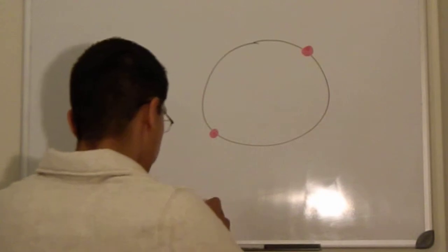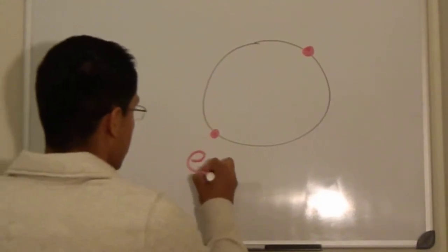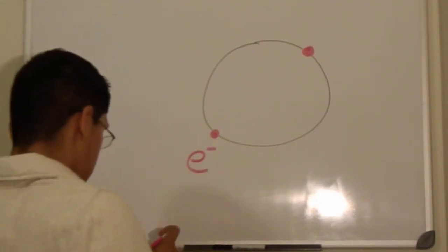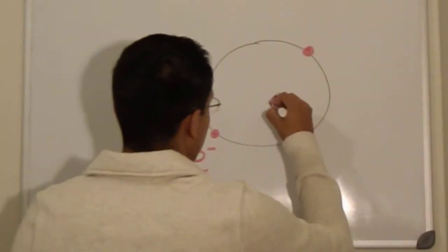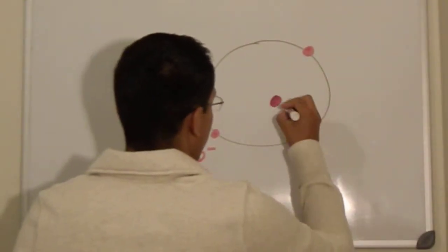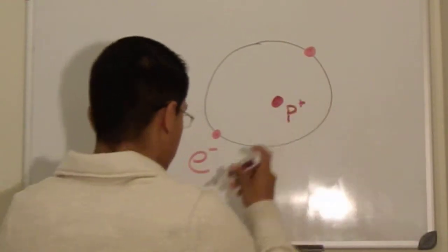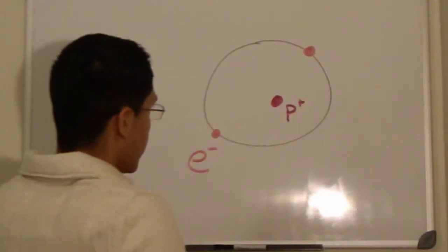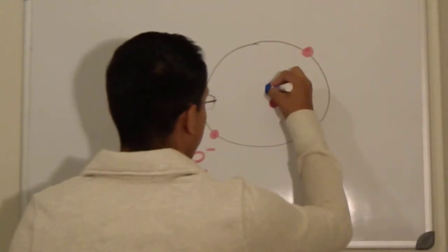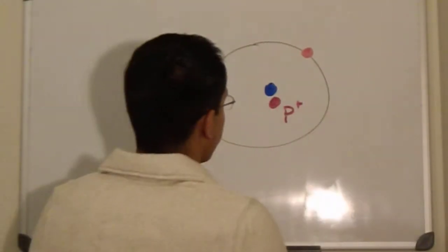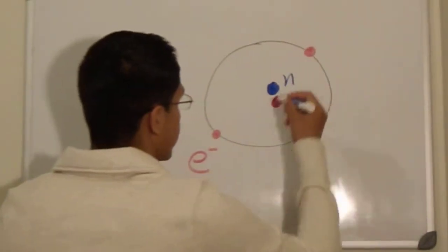Let's call these guys protons and this other guy a neutron. I think its symbol is N, yeah.